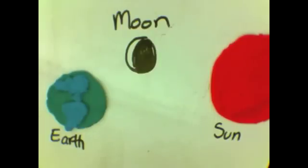The reason we can see the moon in our sky is because the light from the sun is reflecting off the moon to the earth, like this.